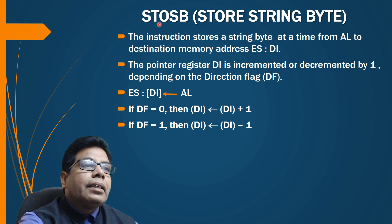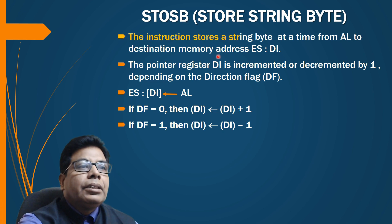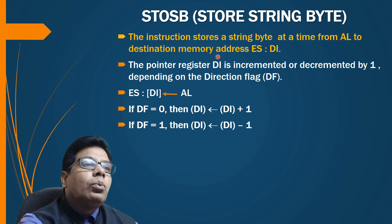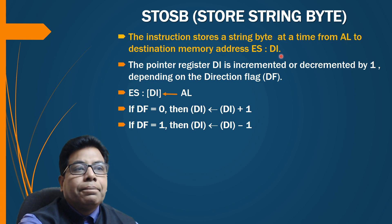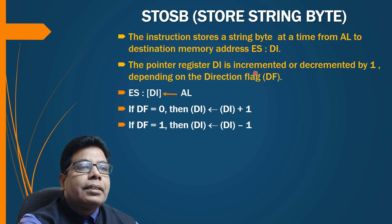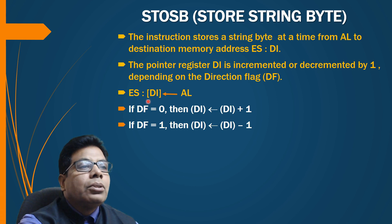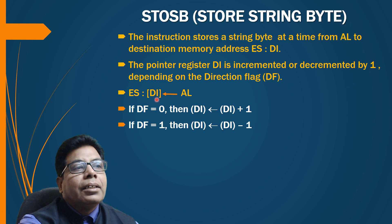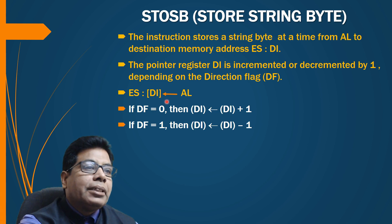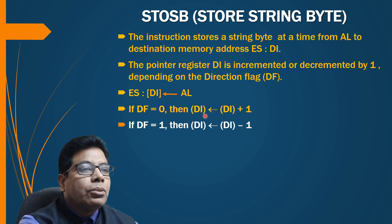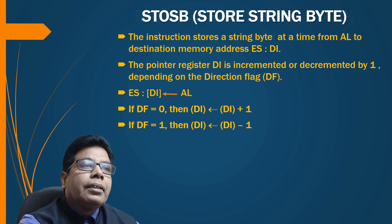STOSB — store string byte — stores a string byte at a time from the AL register to the destination memory location ES:DI. The pointer register DI is incremented or decremented by one depending on the direction flag. The contents of AL are transferred to the memory location pointed to by ES:DI (physical address = ES × 10h + DI). If DF=0, DI is incremented by one; if DF=1, DI is decremented by one.